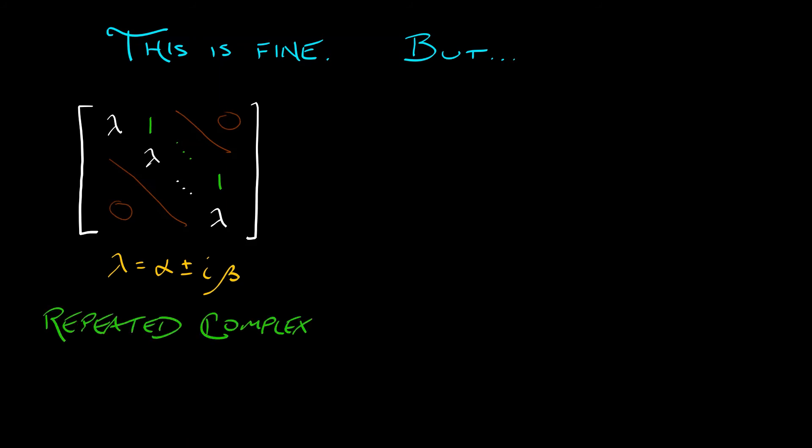Now, so far, this is fine. This is just like we did in 2D. But what if we have that Jordan block with repeated eigenvalues, with repeated complex conjugate pairs of eigenvalues? What do we do in this case?